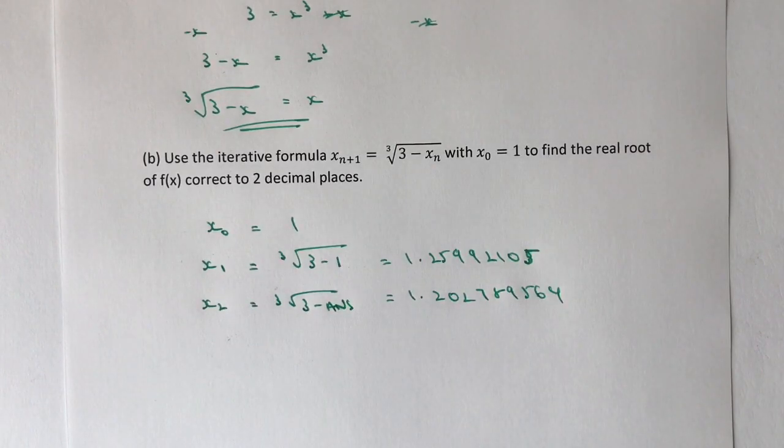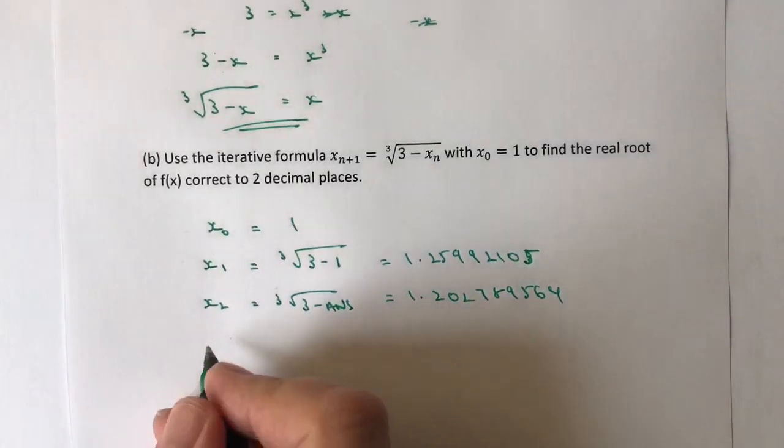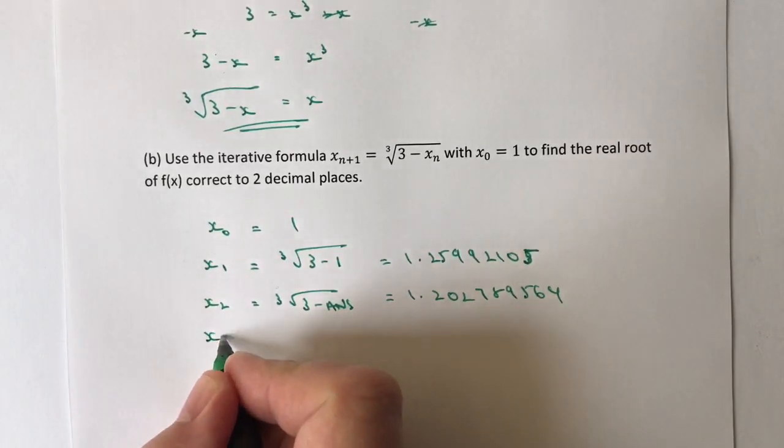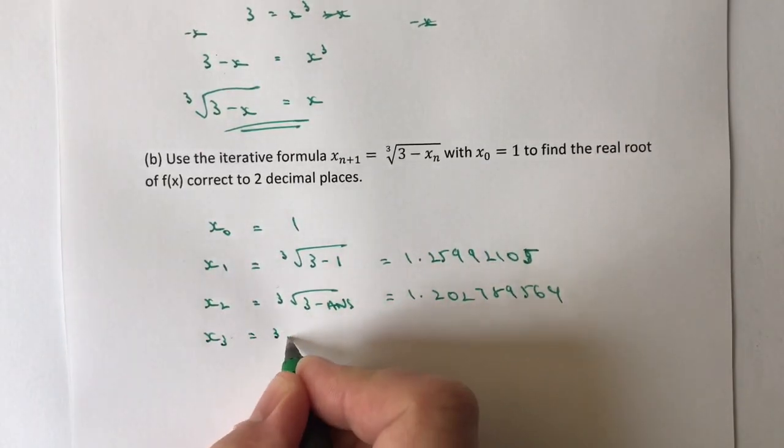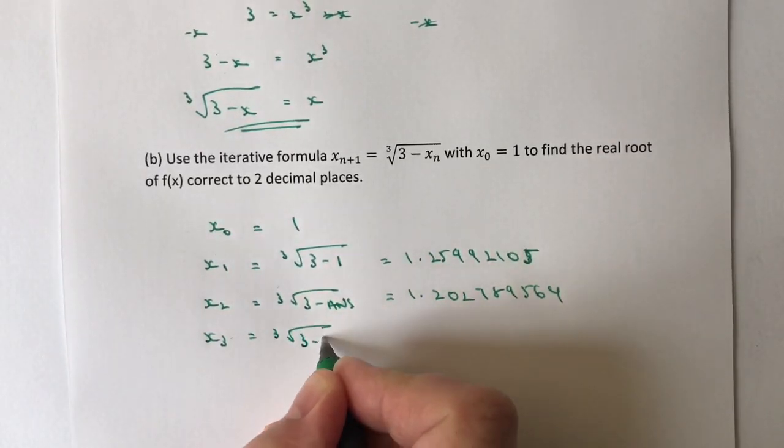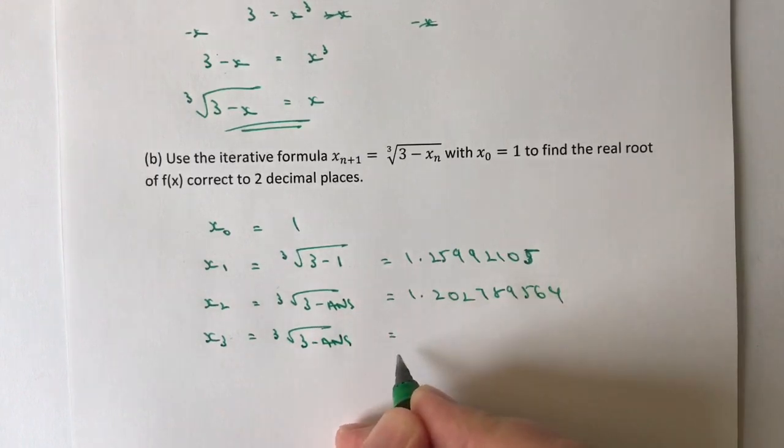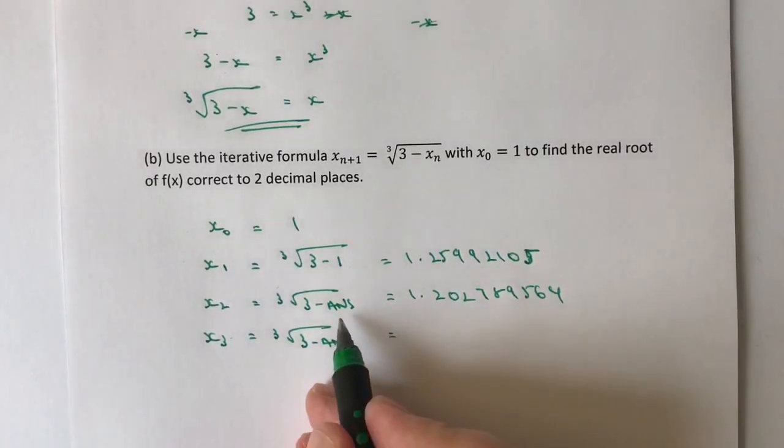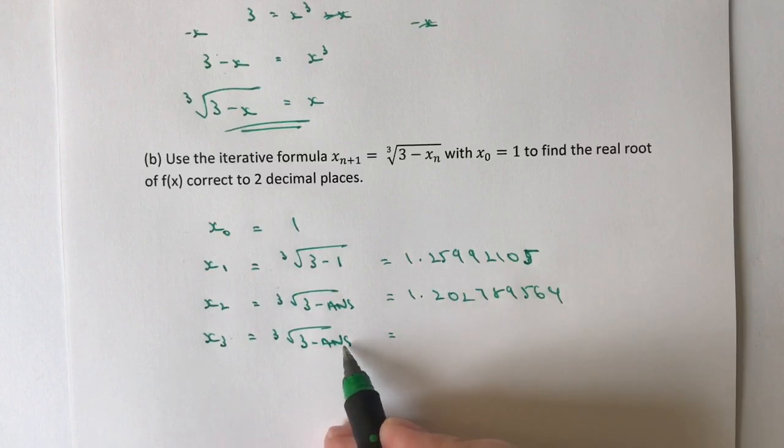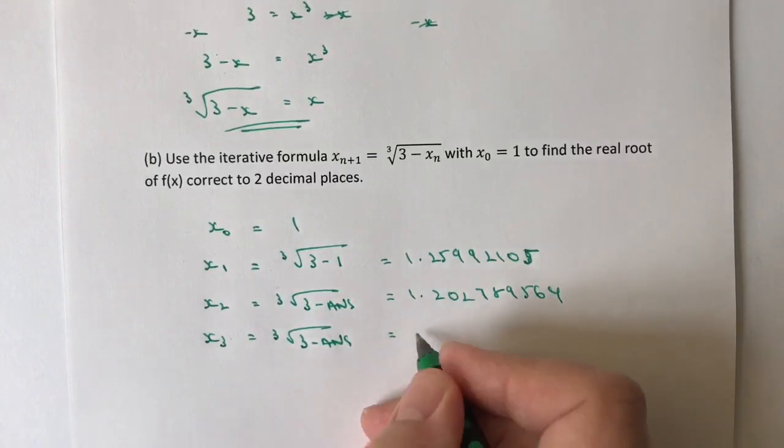I would suggest that you're not tempted to just shorten this down, because we need to get to a point where we get the answer as being correct to two decimal places all the time. As I mentioned, I'm going to explain why this is happening at the end.